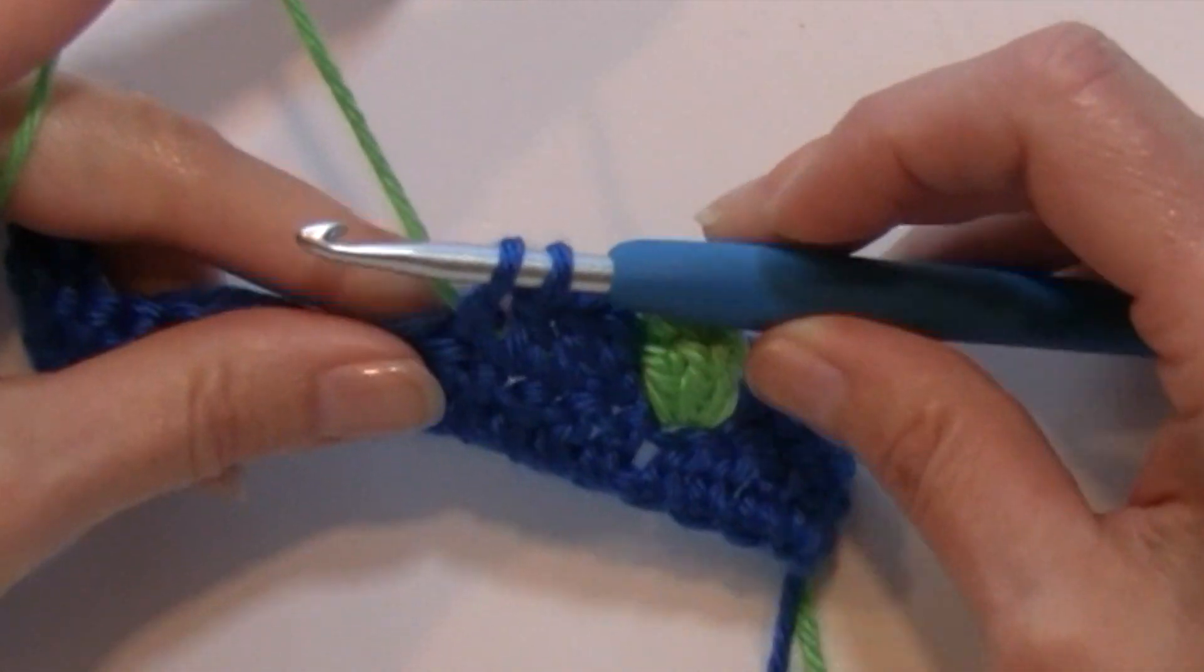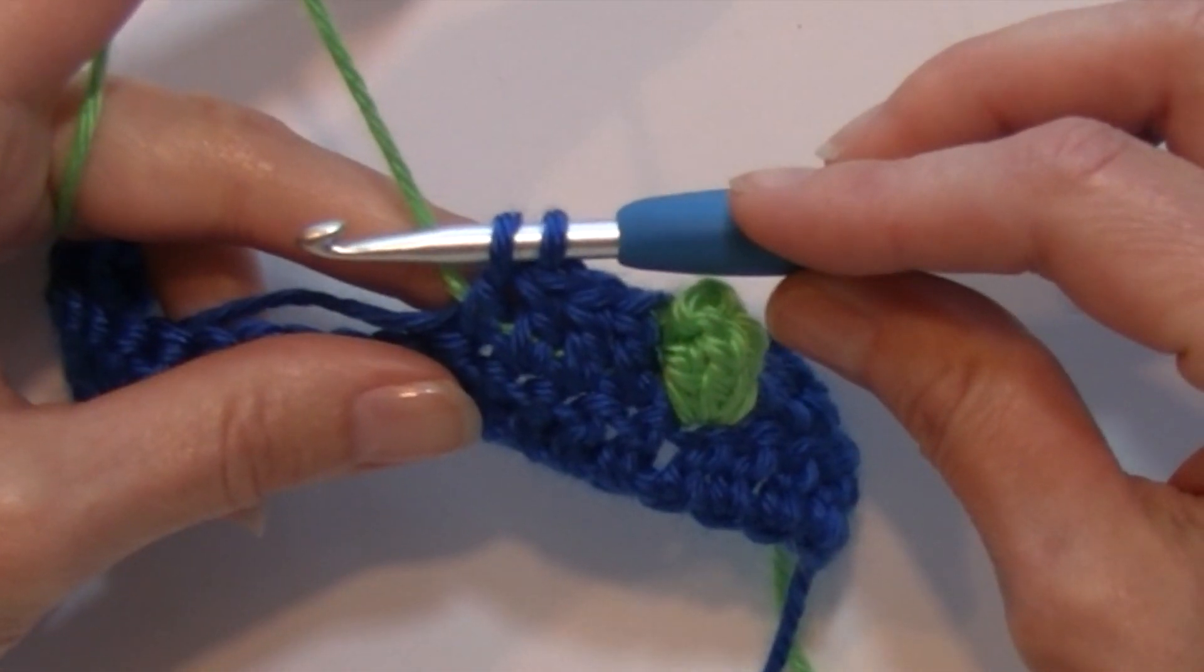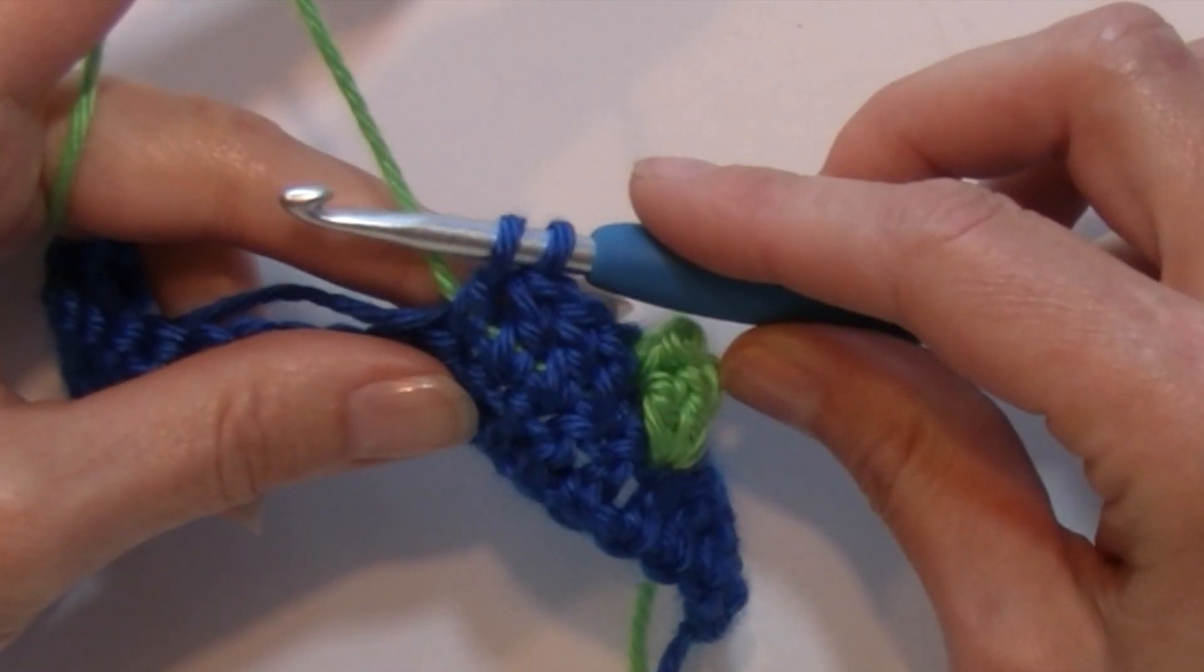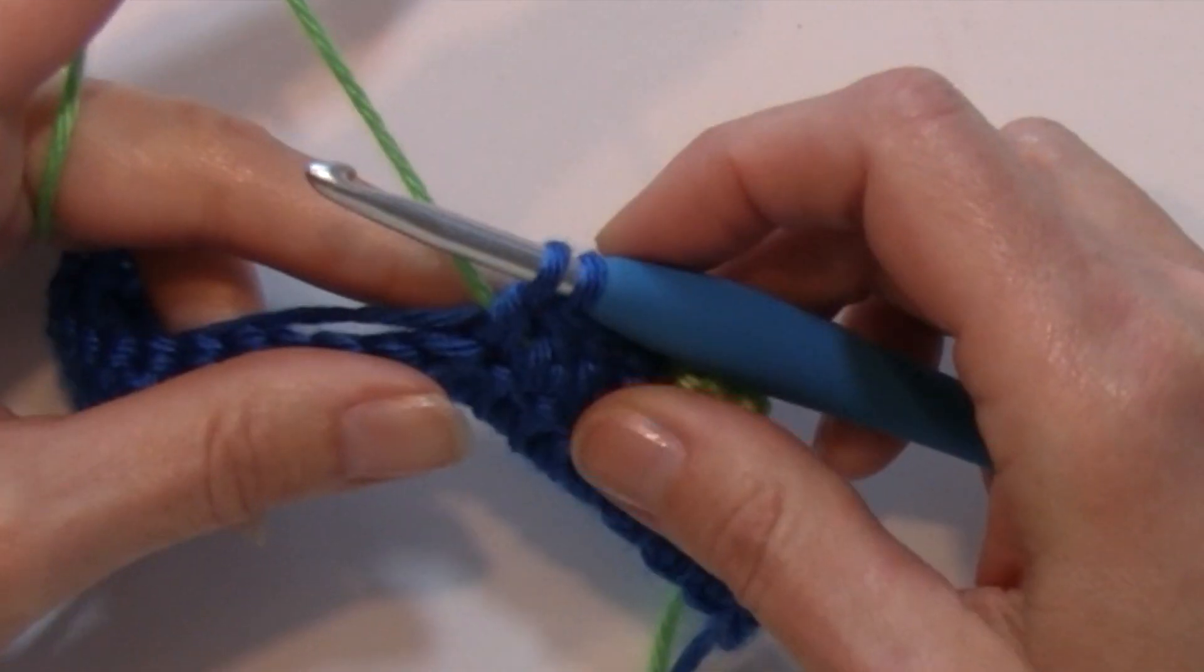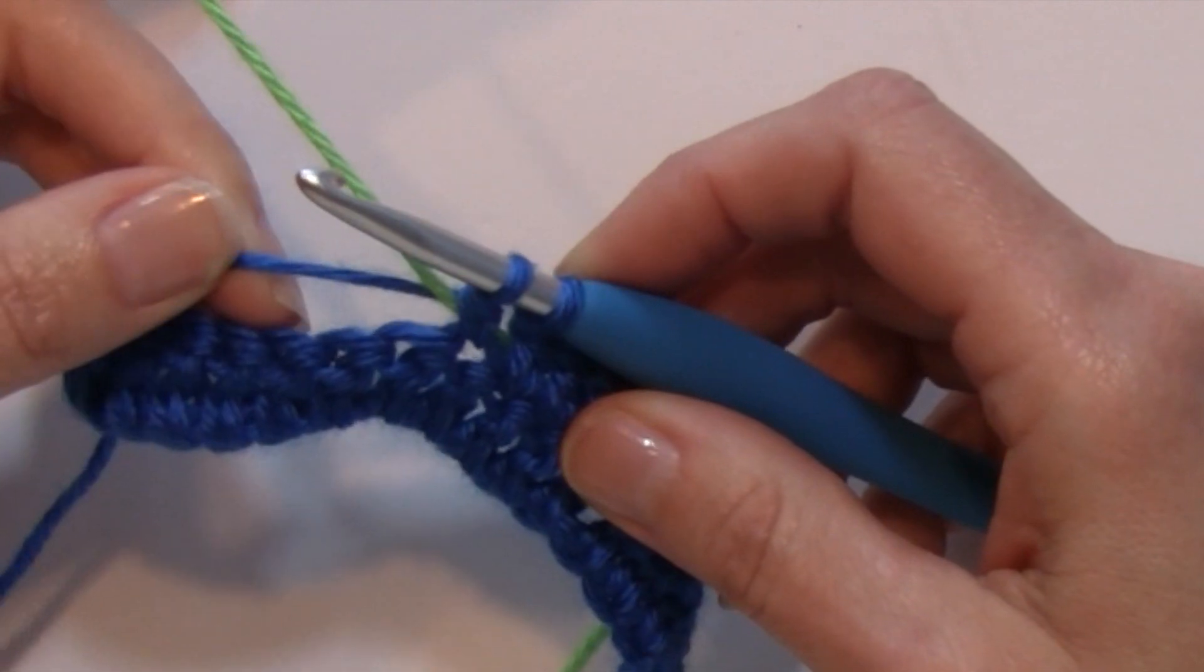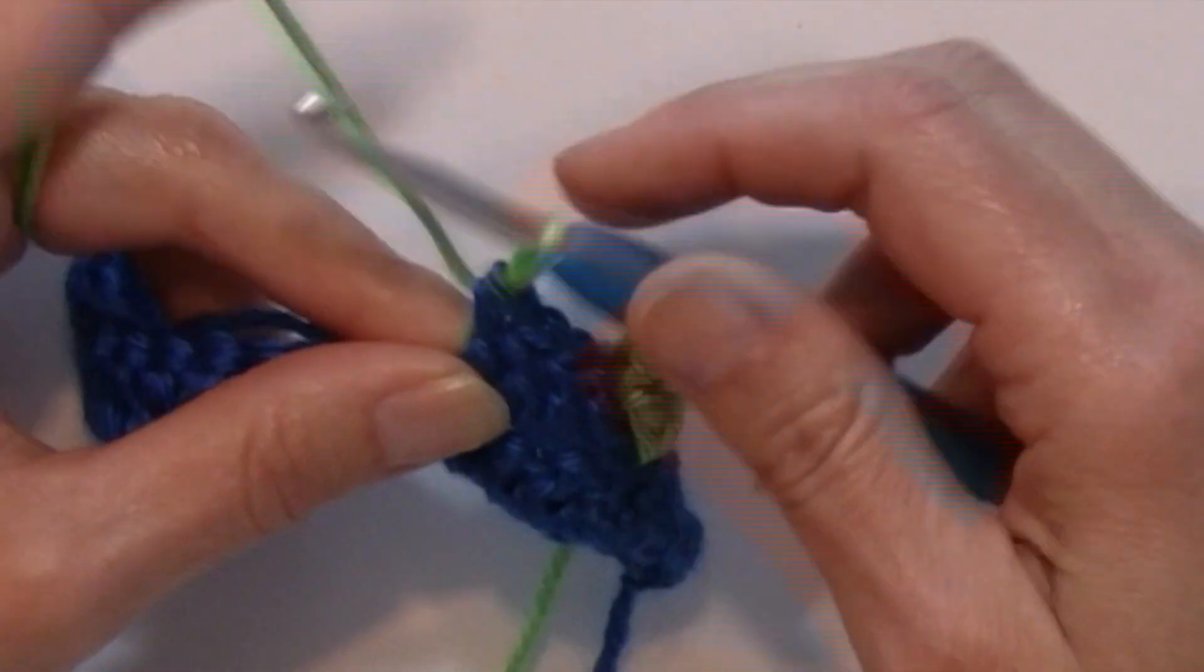Once I've worked those four double crochets I don't complete that last double crochet because I want to work that popcorn stitch in my next color, so I'm going to drop that color and pull in color B.